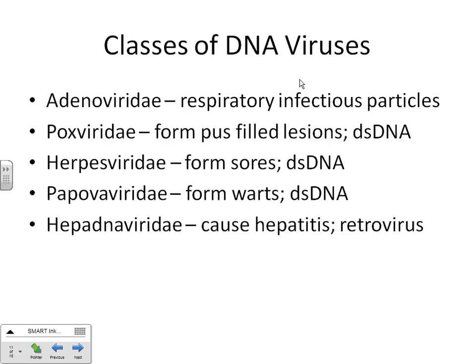Last group: hepadnaviridae — those are the ones that cause hepatitis-type infections. A lot of those are retroviruses, so it's really hard to classify them as DNA or RNA because they actually start out as RNA and then become DNA — that's what makes them a retrovirus. Hepatitis means liver inflammation. Hepatitis A is essentially food poisoning — a lot of people have had it and didn't know it; it usually doesn't cause long-term complications. Hepatitis B and C are the ones you really need to care about, as you'll deteriorate slowly over time. We'll talk about them later.